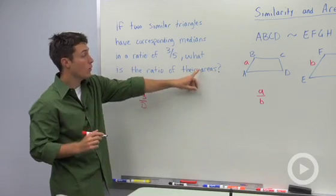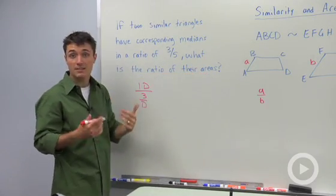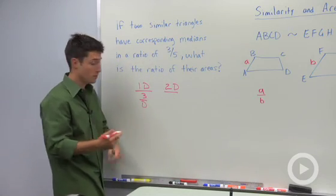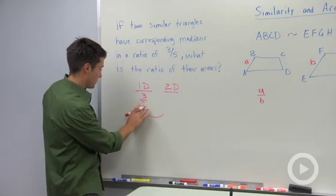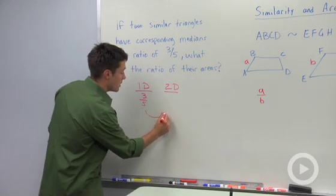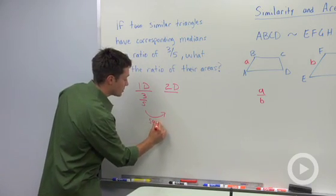So to go from one dimension to two dimensions, because it's asking about area, we want something that's two-dimensional. And actually I don't know what that number is, it's supposed to be three to five. To go from one dimension to two dimensions, we need to square our ratio.